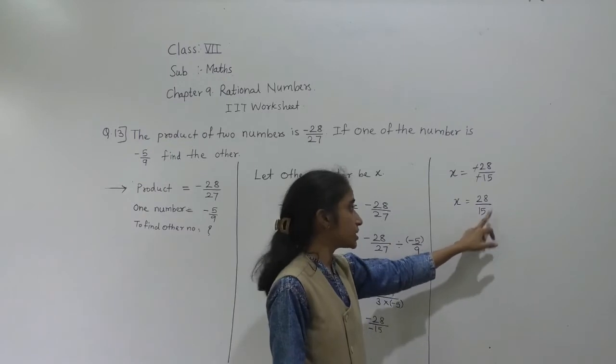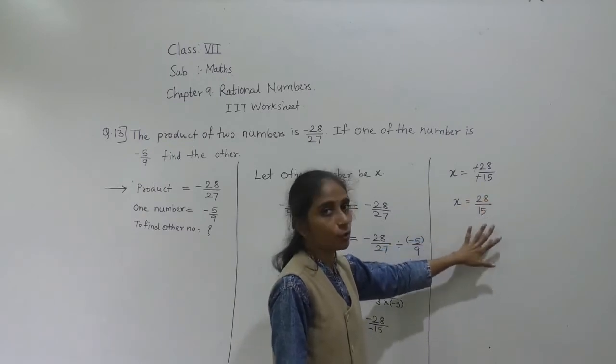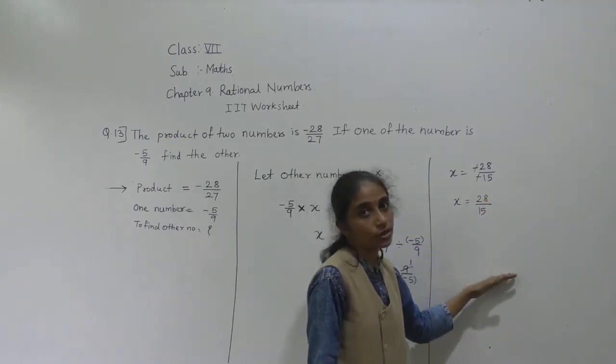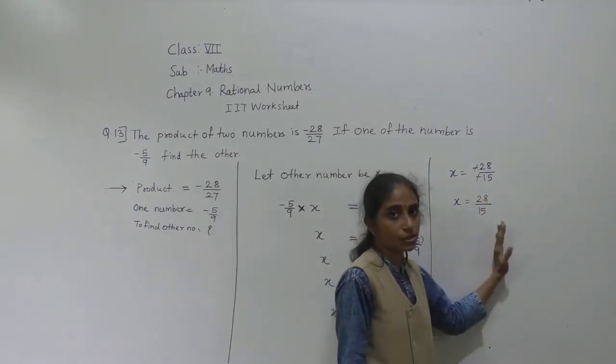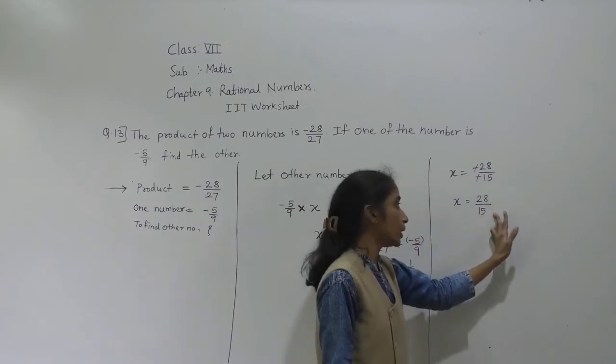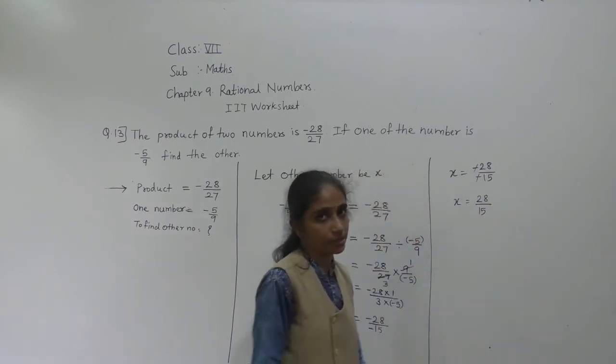X is equal to minus 28 upon minus 15. The minus and minus signs cancel. So what remains is 28 upon 15. So the answer is X equals 28 upon 15. In the options, 28 upon 15 is given and they have not converted into mixed fractions, so 28 upon 15 is the correct answer.